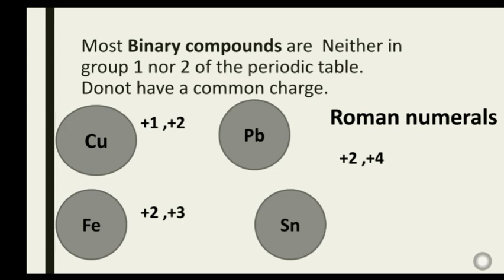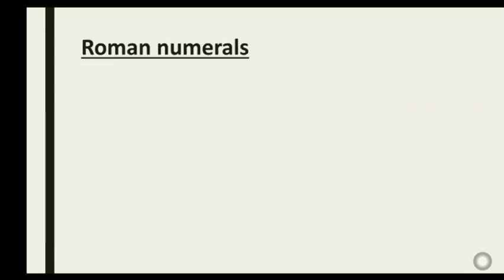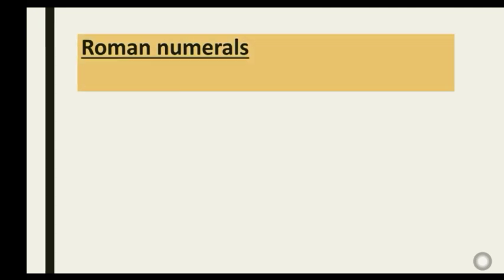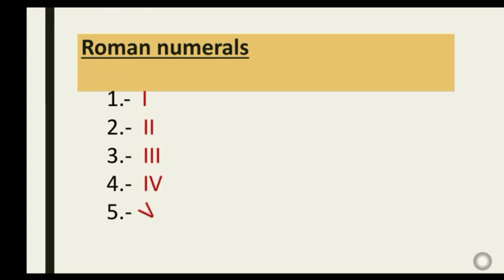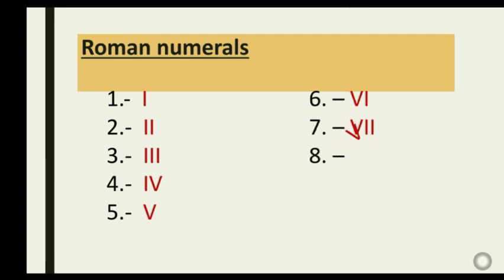For the sake of this video, let's go over the Roman numerals so you know how to read and write them. Roman numeral 1 is I, 2 is II, 3 is III, 4 is IV, 5 is V, 6 is VI, 7 is VII, 8 is VIII, 9 is IX, and 10 is X.